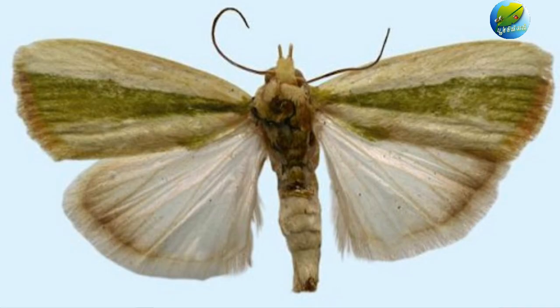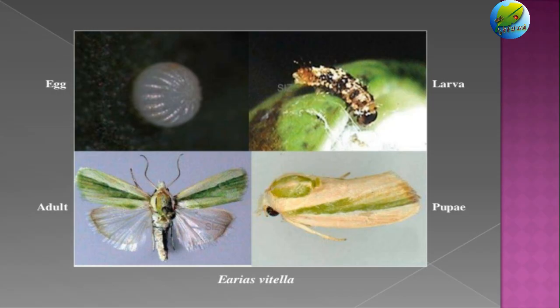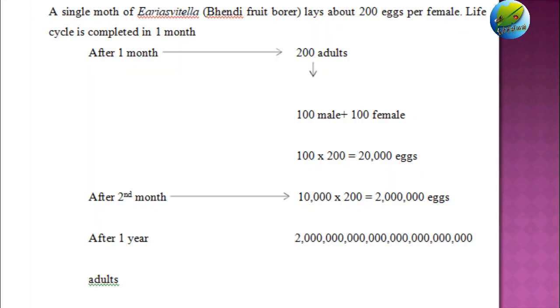For example, a single moth of Areis vitella, the bendy fruit borer, lays about 200 eggs per female. The life cycle is completed in one month, so after one month the 200 adults produce 100 males and 100 females. The 100 females will again lay 200 eggs each, making 20,000 eggs, of which 10,000 will be female. In the next month, all 10,000 females lay 200 eggs again, making 20,000,000 eggs.